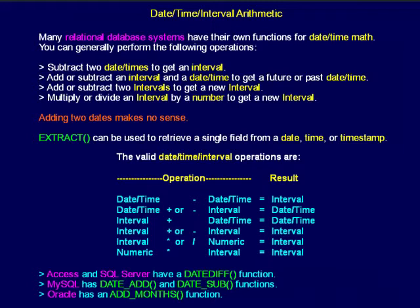You can generally perform the following operations: subtract two date-times to get an interval; add or subtract an interval and a date-time to get a future or past date-time; add or subtract two intervals to get a new interval; or multiply or divide an interval by a number to get a new interval.